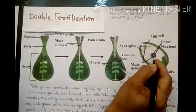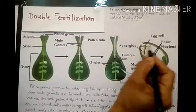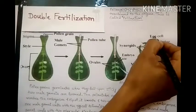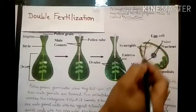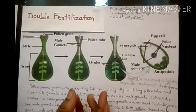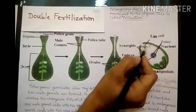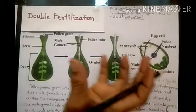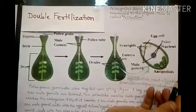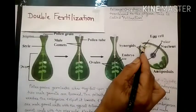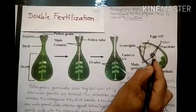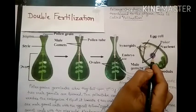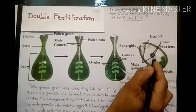When these male gametes enter into the embryo sac, one male gamete unites with the egg cell and forms a zygote. There are two polar nuclei, and the second male gamete unites with the two polar nuclei. Hence it is called double fertilization.